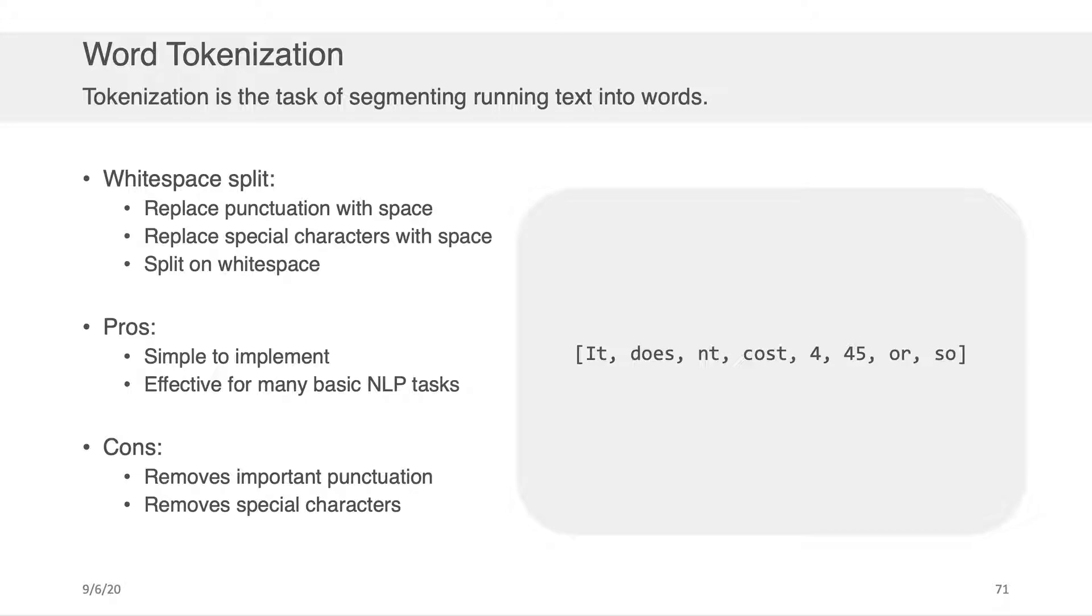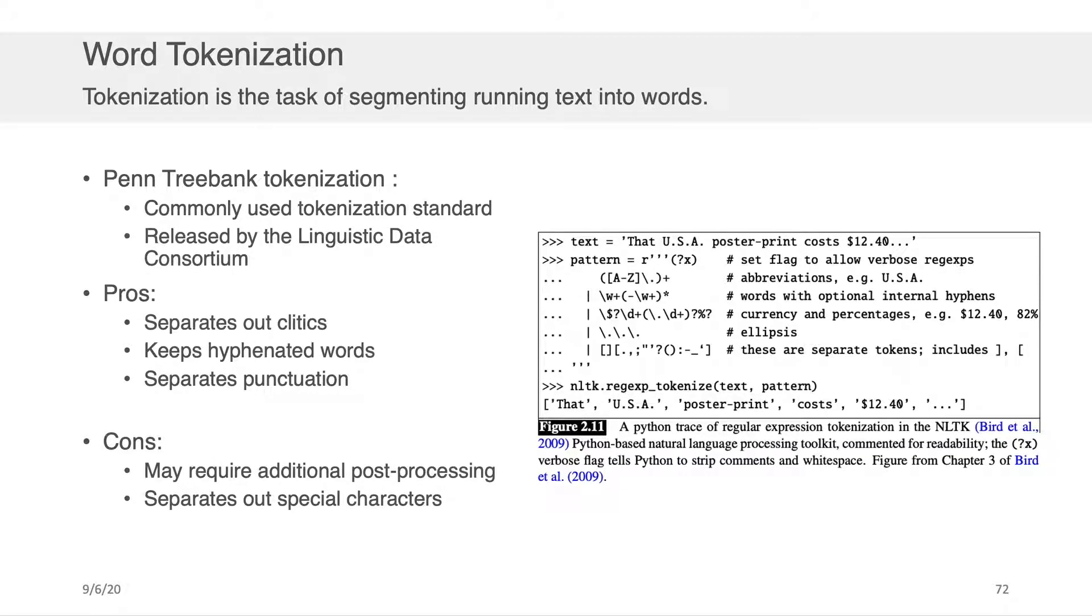The four and the 45, which are actually related to the cost, would be split separate. And this sort of doesn't capture potentially what we want if we were interested in figuring out something about the costs of things within a menu, for example. Okay, so when you're doing word tokenization, the easiest off-the-shelf tool to use for that is Penn Treebank tokenization.